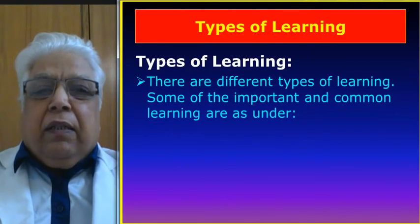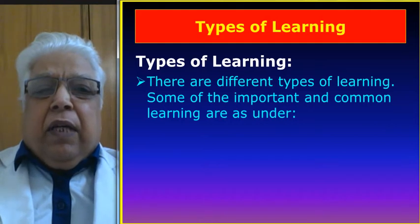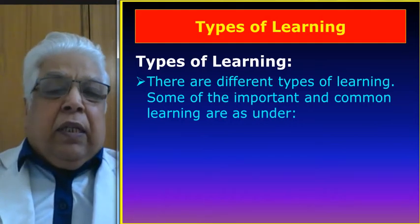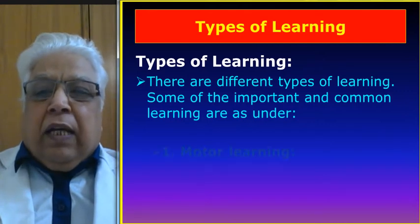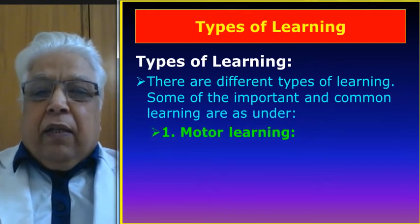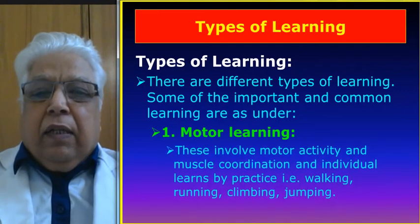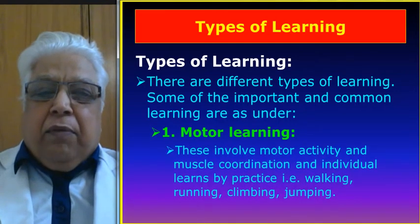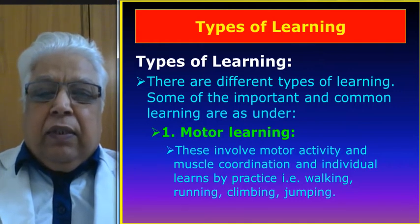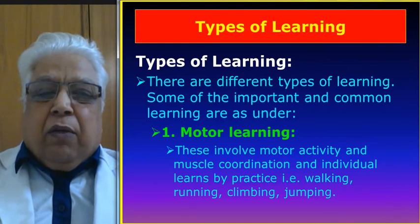Types of learning. There are different types of learning, and some of the important and common ones are as follows. Number one is motor learning. This involves motor activity and muscle coordination, and the individual learns by practice — like walking, running, climbing, and jumping.